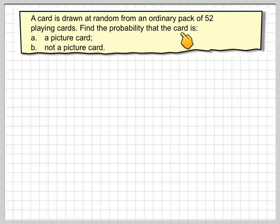It says a card is drawn at random from an ordinary pack of 52 playing cards. Find the probability that the card is a picture card, and B, not a picture card.